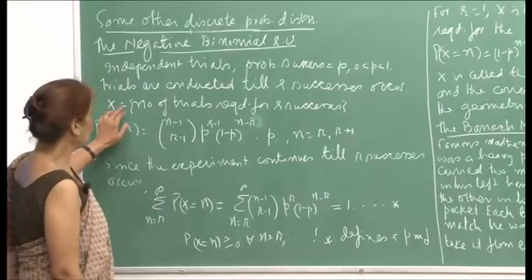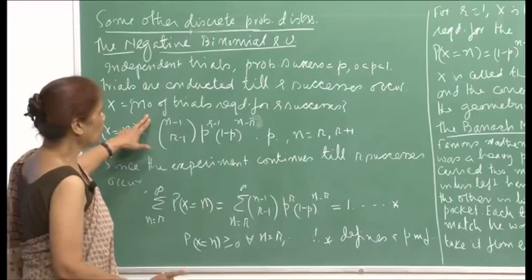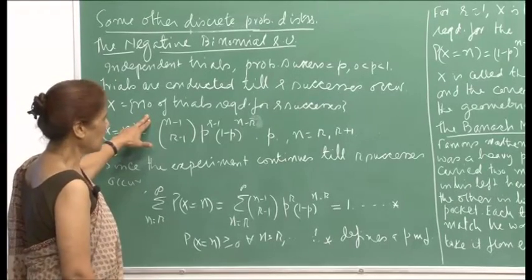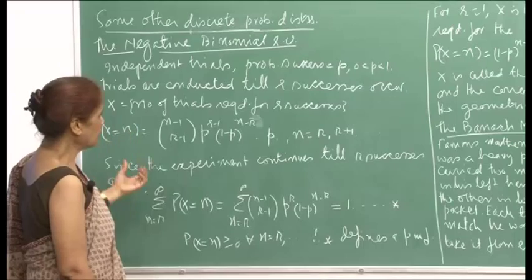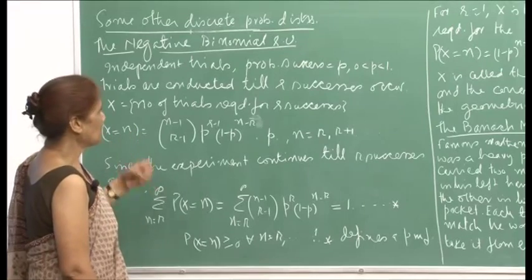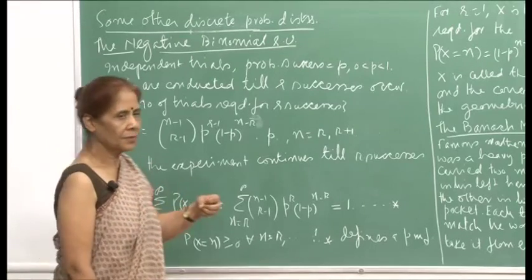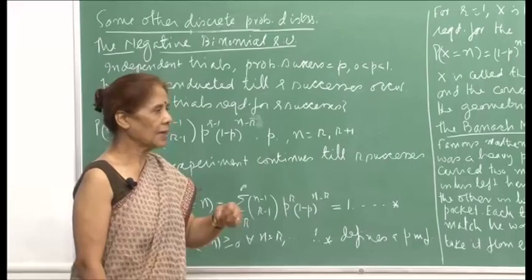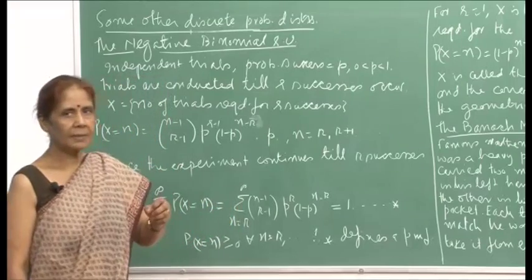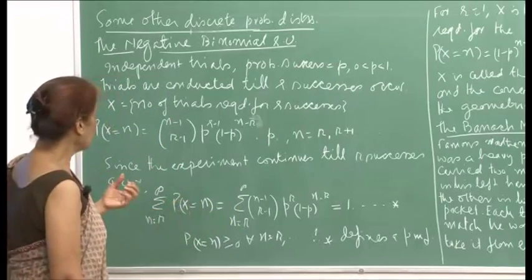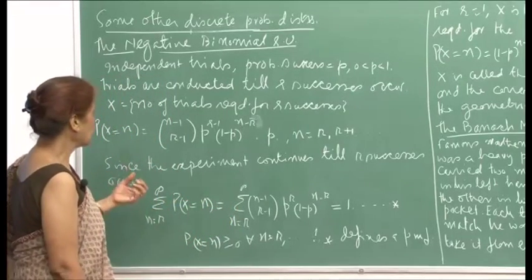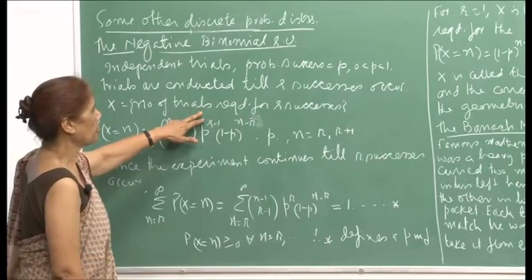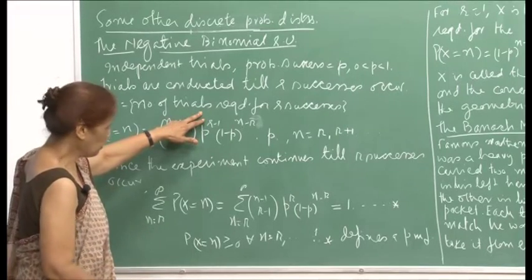X will be the number of trials required for r successes. In the binomial case, the trials were fixed, and you had to then ask for the probability of r successes. Here, the number of successes is fixed, and you are asking: what are the number of trials required so that r successes take place?